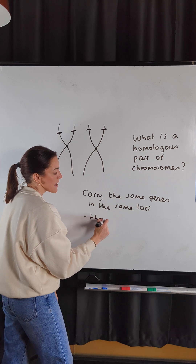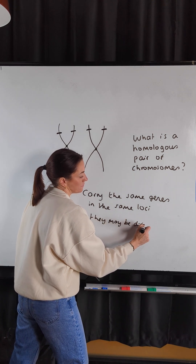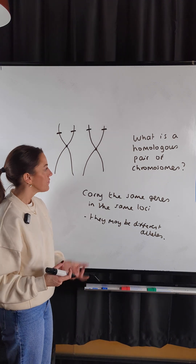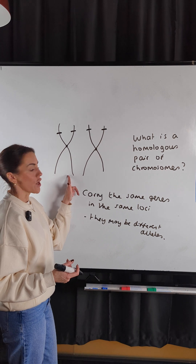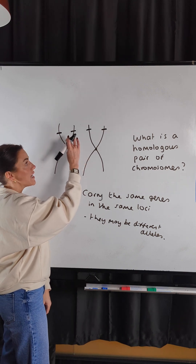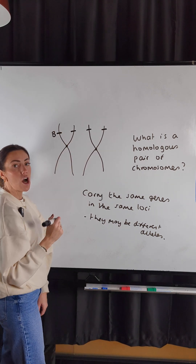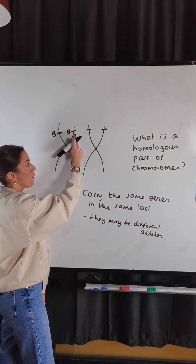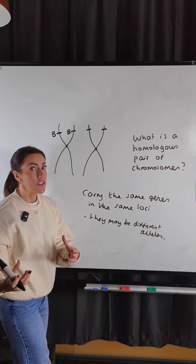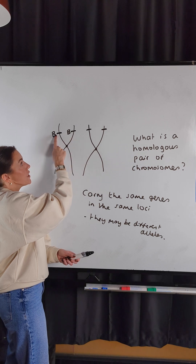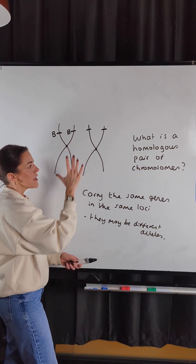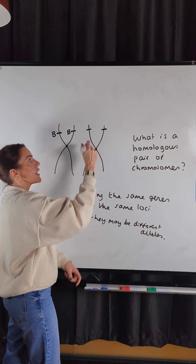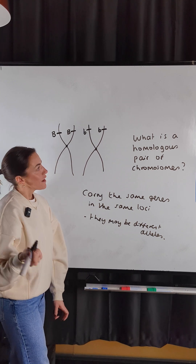However, they may be different alleles. An allele is just a different version of the same gene. So for example, this chromosome in the homologous pair — taking the eye colour example — it has the eye colour gene here and it could have the dominant allele for brown eyes. This chromosome in the same homologous pair has the same gene in the same loci, but it could have the recessive allele for blue eyes.